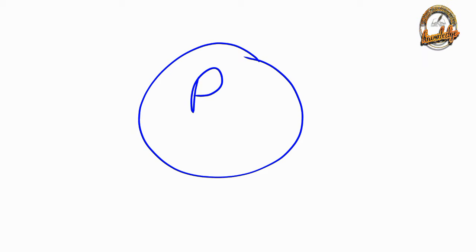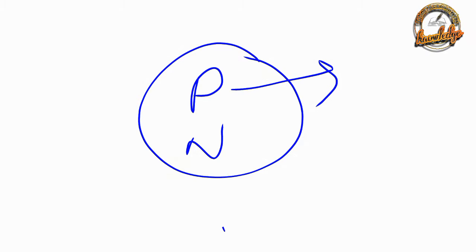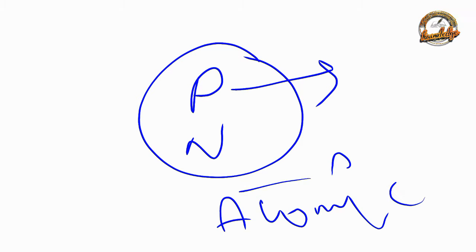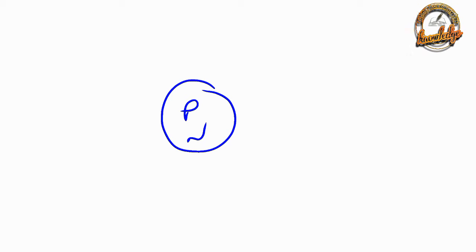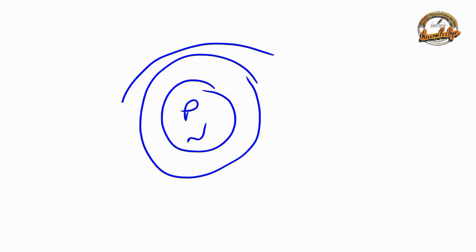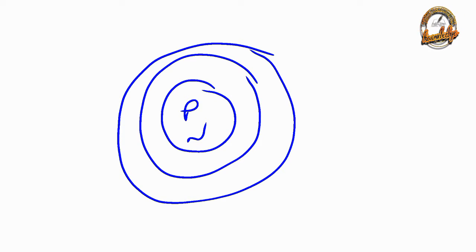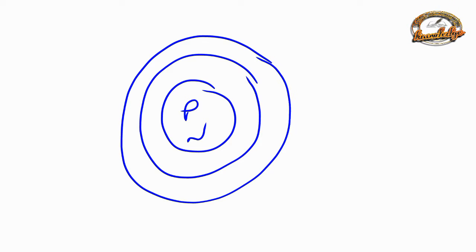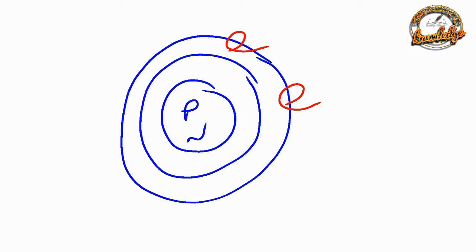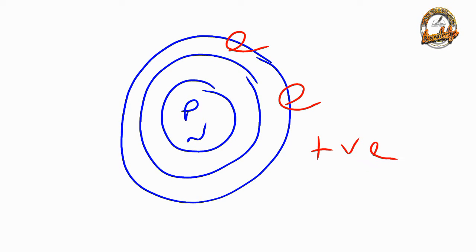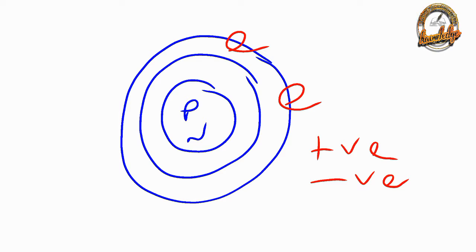The atomic particles we are going to talk about are found in the atom and nucleus. The nucleus contains protons and neutrons. The other particle is the electron. The electron has a negative charge, and the neutron has no charge.